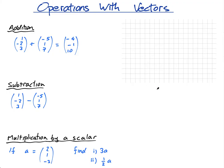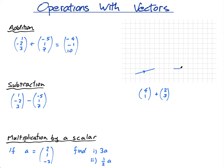What that means geometrically: imagine I had the vector 4, 1. I'm just going to do it in 2D because you can see it more easily, but it's the same principle in 3D. So 4, 1 looks like this — 4 across and 1 up. And 2, 3 looks like 2 across and 3 up, something like that.